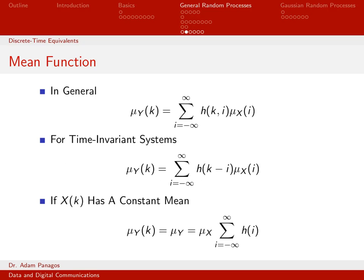First, let's talk about the mean function. The output mean function of a discrete time system is called mu sub y of k. The notation still uses parentheses, but we use k to indicate this is a discrete time process, also sometimes called a random sequence. In general, it equals an infinite sum of h(k, i) times the input mean function. This is general because we're assuming a linear system that is not necessarily time-invariant.